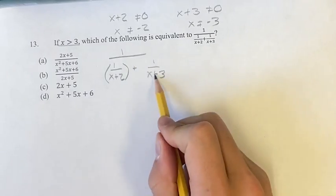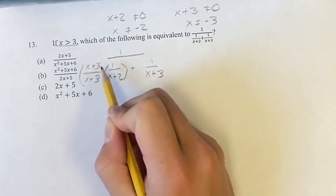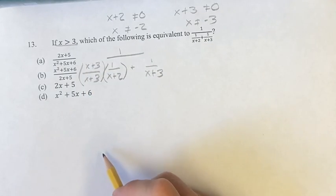So we're going to multiply this one by the denominator of the other one divided by itself, because therefore we're just multiplying by 1, so we're not actually changing the answer.